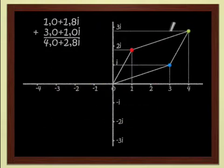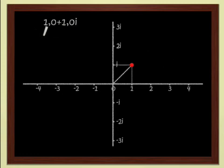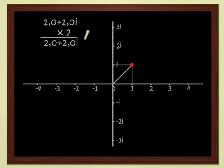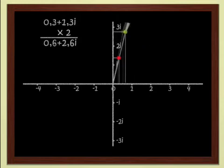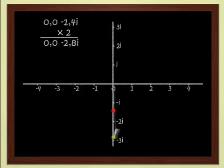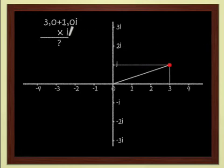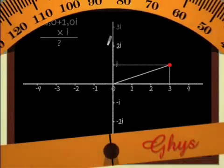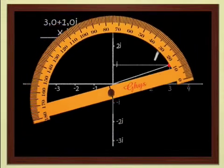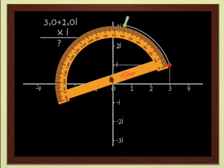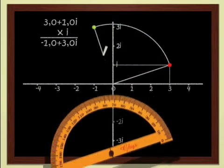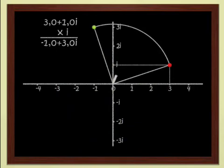Much more interestingly, these complex numbers can also be multiplied, just like real numbers. We know how to multiply a complex number by 2: 2 times 1 plus 2i gives 2 plus 4i. Geometrically, multiplying by 2 is just scaling up by a factor of 2 — if we double the red point, we get the green point. Multiplying by i is not difficult either, since we know that i corresponds to a quarter turn. In order to multiply 3 plus i by i, we just rotate by a quarter turn. We get minus 1 plus 3i.